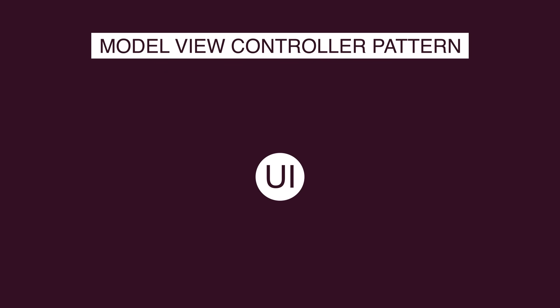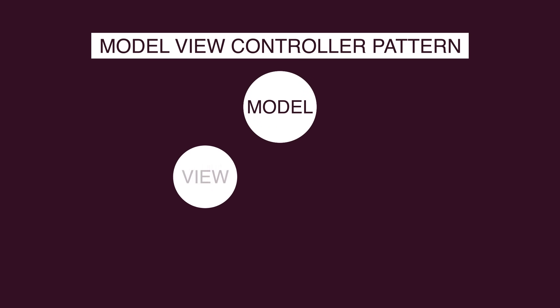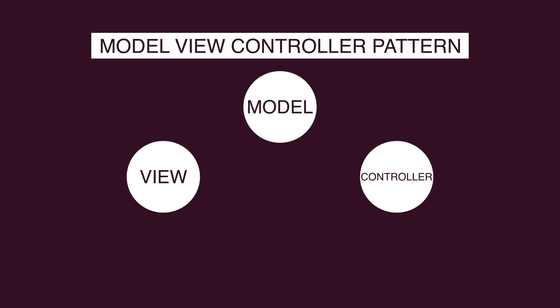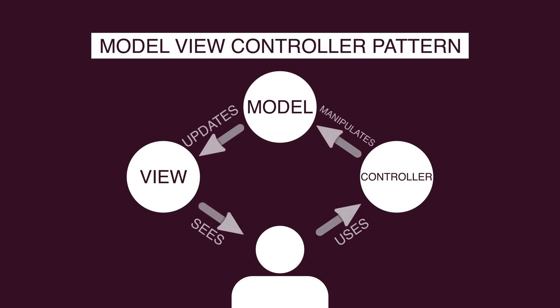The solution is to use the Model-View-Controller Pattern, which separates application functionality into three kinds of components: Model, which contains the core functionality and data; View, which displays the information to the user where more than one view may be defined; and Controller, which handles the input from the user. The Model-View-Controller Pattern is commonly used in web frameworks such as Django and Rails.